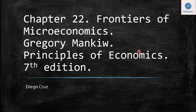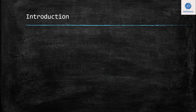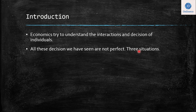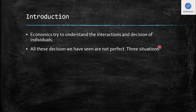Hi everyone, we are going to talk today about the frontiers of microeconomics. This is Chapter 22 of the book by Gregory Mankiw, Principles of Economics. Economics, at the end of the day, tries to understand the interactions and decisions of individuals. We have been making several assumptions throughout the chapters to arrive at different conclusions. However, we know that all these decisions are not perfect, so we are going to split this situation into three parts to better analyze the idea of the frontiers of microeconomics.